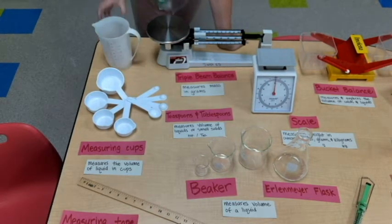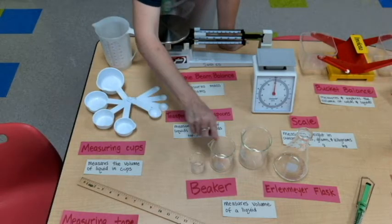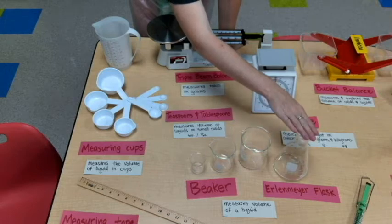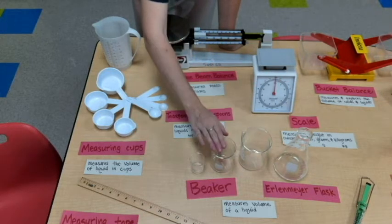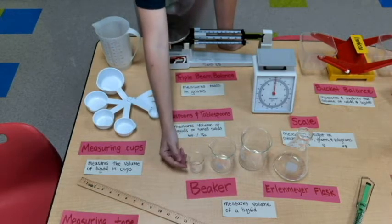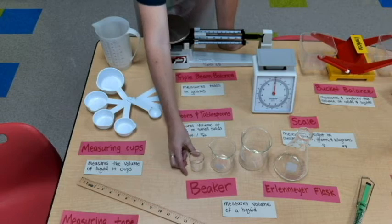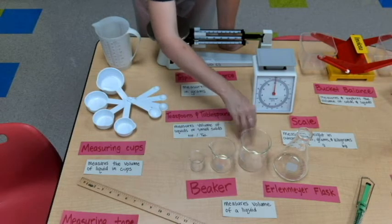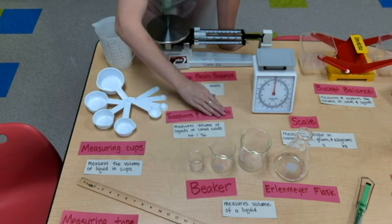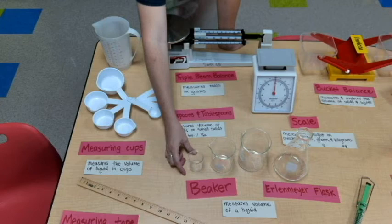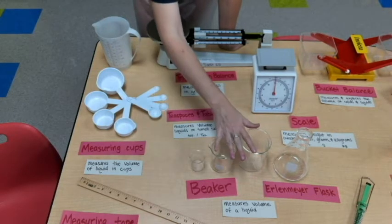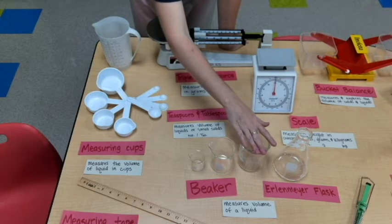And then we have beakers. Here's a little small size, medium, and a large size, and an Erlenmeyer flask. You are able to put liquids in here, and it does have measurements in milliliters to see the volume of a liquid. But we also use beakers in the science lab to hold liquids, to stir liquids, to heat up liquids. So beakers actually have a lot more uses than just measurement.